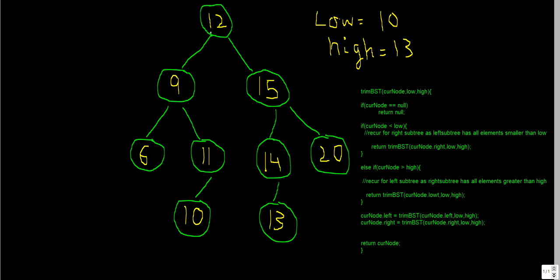If a node is not part of our solution, its left subtree is also not part of the solution — because if any element is less than low, its left subtree must also be less than low. This is the BST property: all left elements are less than the current node and all right elements are greater. So if the current node is less than low, we eliminate the left subtree along with it. If the current node is greater than high, we eliminate the right subtree along with it.